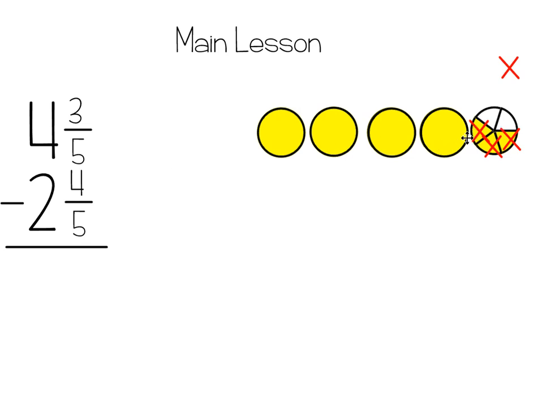So if you're using a model, you can trade. You can trade a hole and make it into fifths. You can cut it into your denominator. My denominator is fifths, so I cut it into fifths. And then I can just cross 1 off. And now I took away my 4 fifths. And then I could cross off 2. And I would see that I have 1 hole left and I have 1, 2, 3, 4. So my answer would be 1 and 4 fifths.